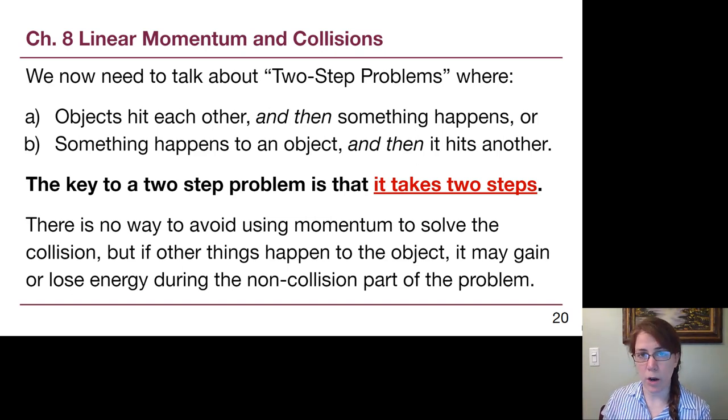The other thing that we need to be aware of is that there are going to be situations where there is a collision and other things that happen. So we now need to talk ourselves through two-step problems. There are two possible situations: objects hit each other and then something happens where that something will look like a Chapter 7 problem. They slide up a ramp, they push into a spring, something where we can follow the energy around after the collision. Or there will be situations where something happens to a single object which makes it faster or slower, and then it hits into some other object.